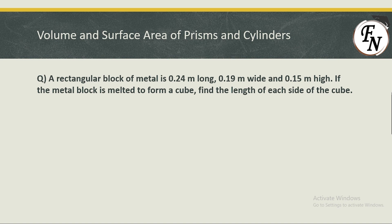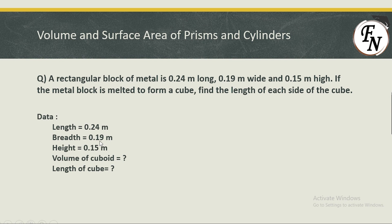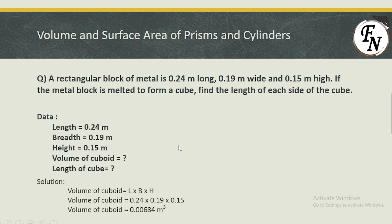Since all dimensions are given, we first find the volume of the cuboid, then use the conservation of volume. The data: length = 0.24 m, breadth = 0.19 m, height = 0.15 m. Volume of cuboid = length × breadth × height. Substituting all values and multiplying gives a volume of 0.00684 m³.